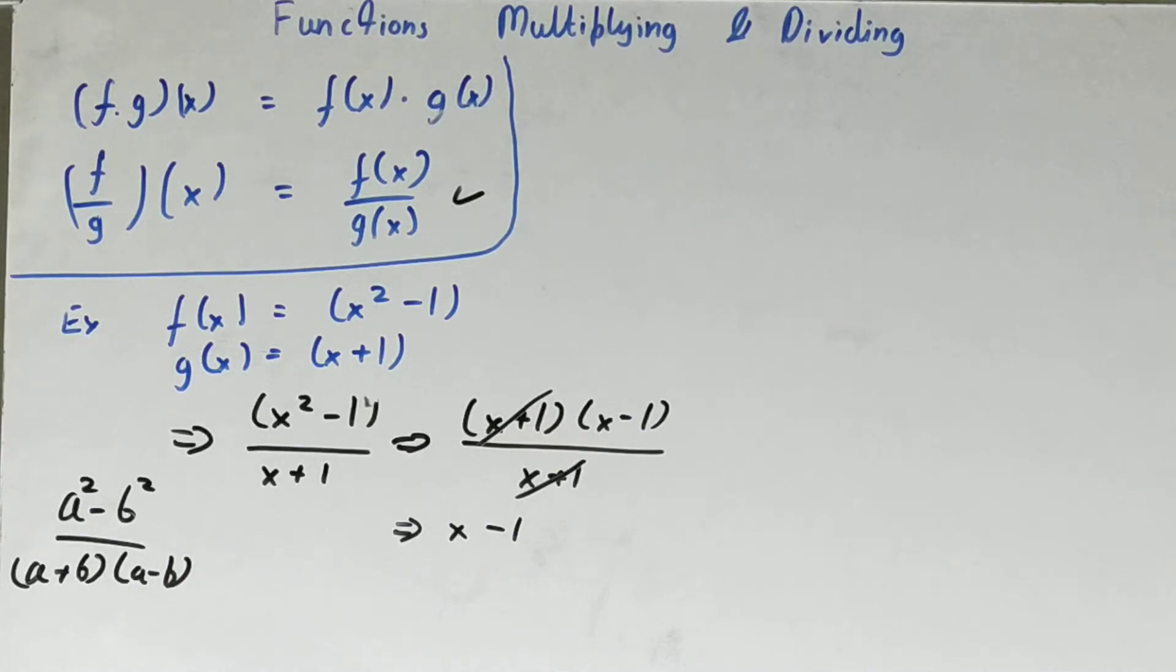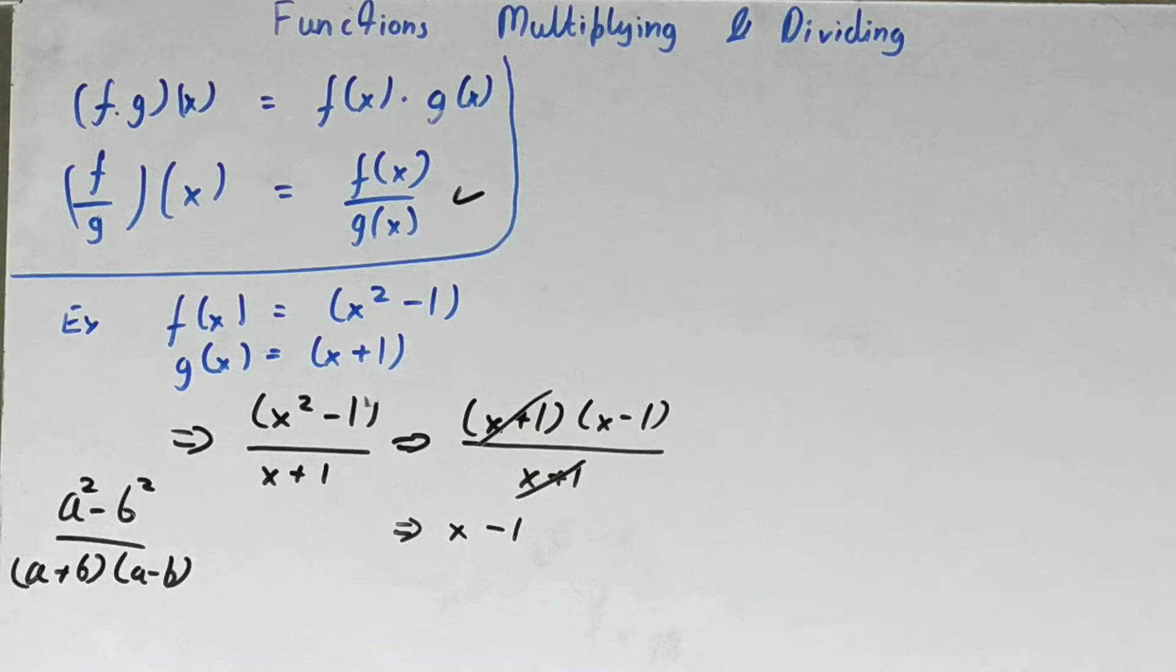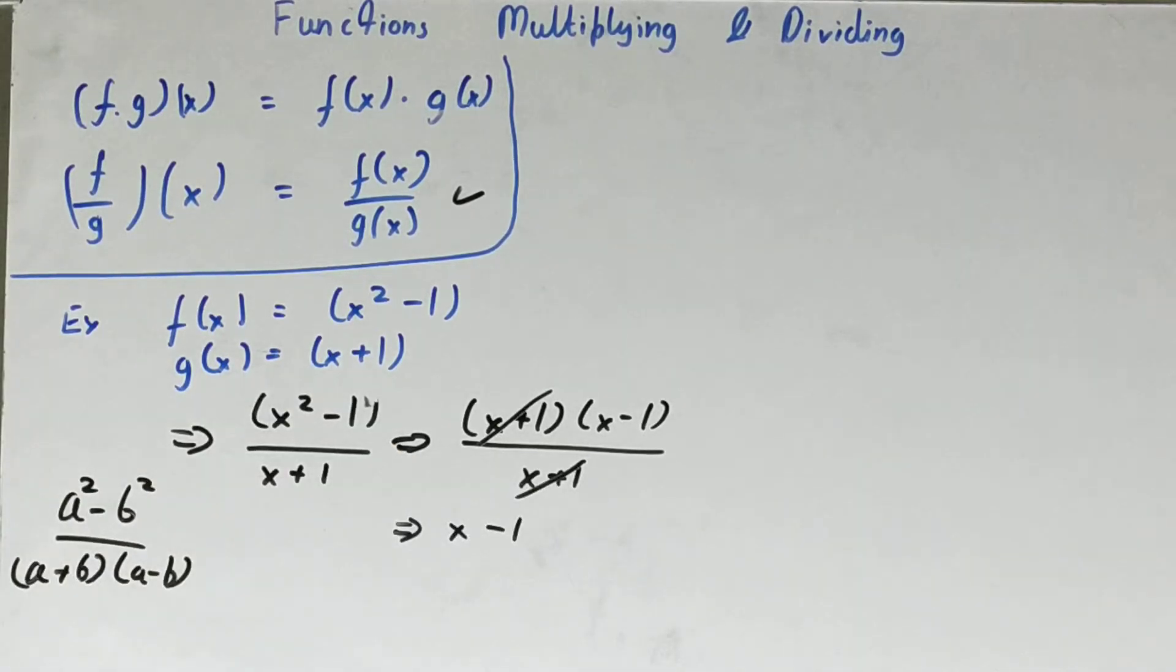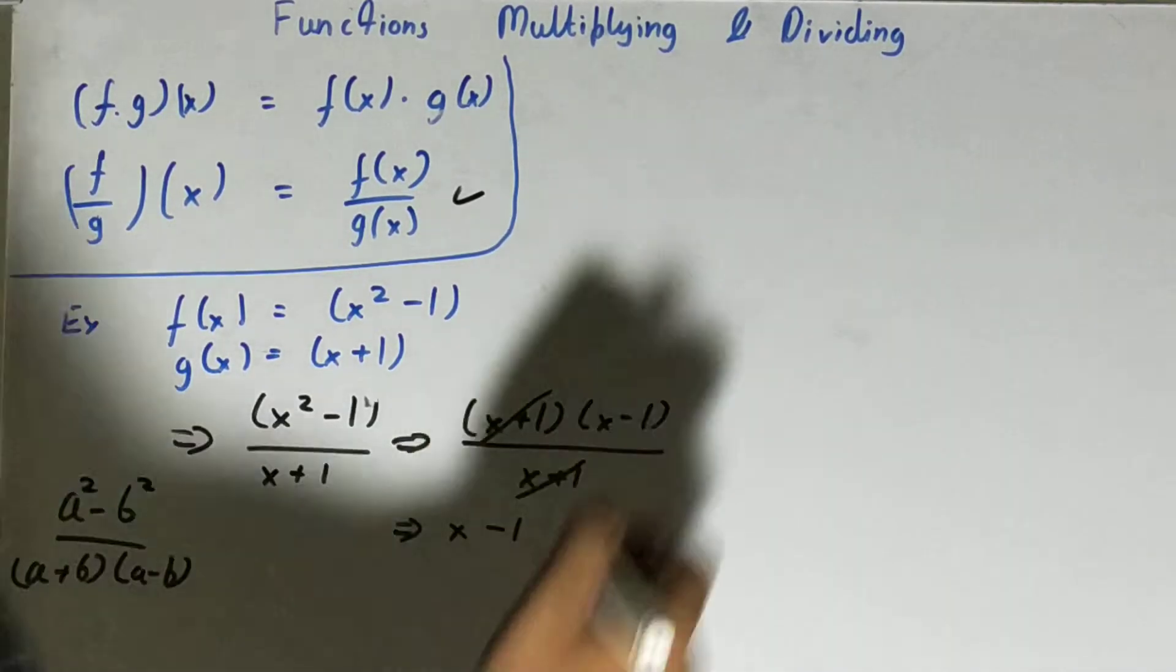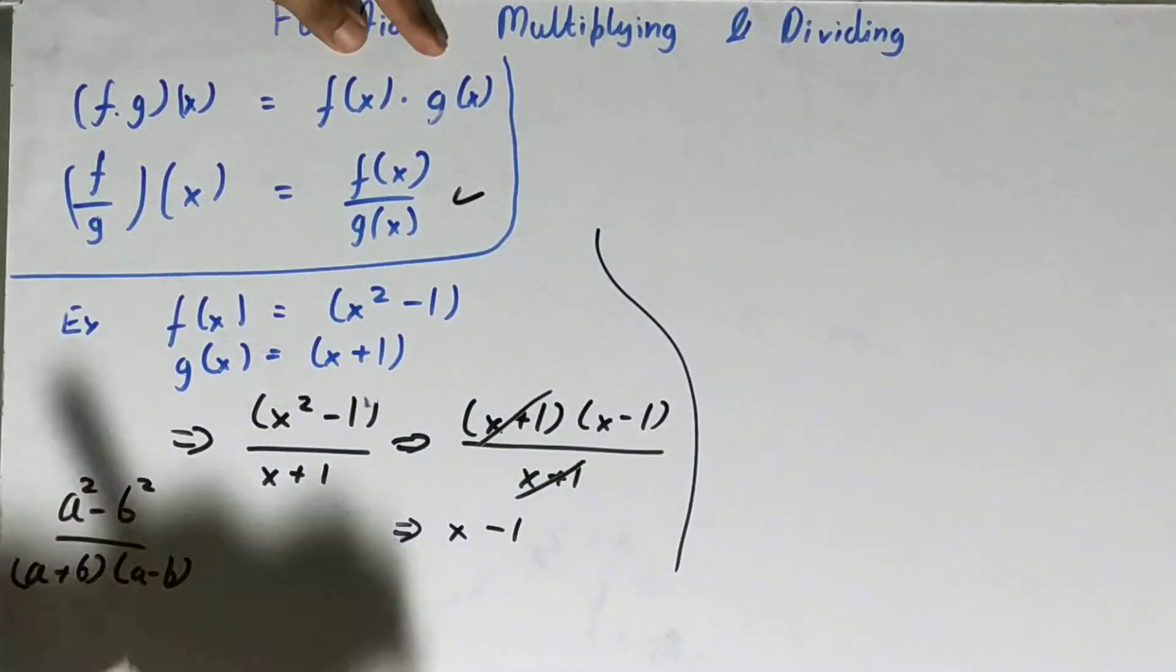So this is how you can divide two functions and find out the answer. That is, you need to factorize if factorization is possible, and then you need to try to simplify as much as you could. And wherever you cannot simplify it further on, that will be your final answer. Let's see about the multiplication procedure.